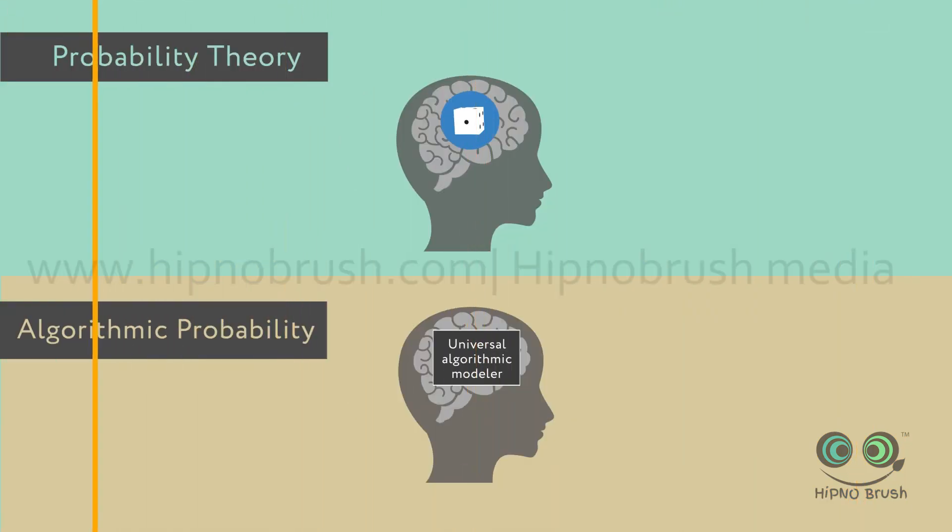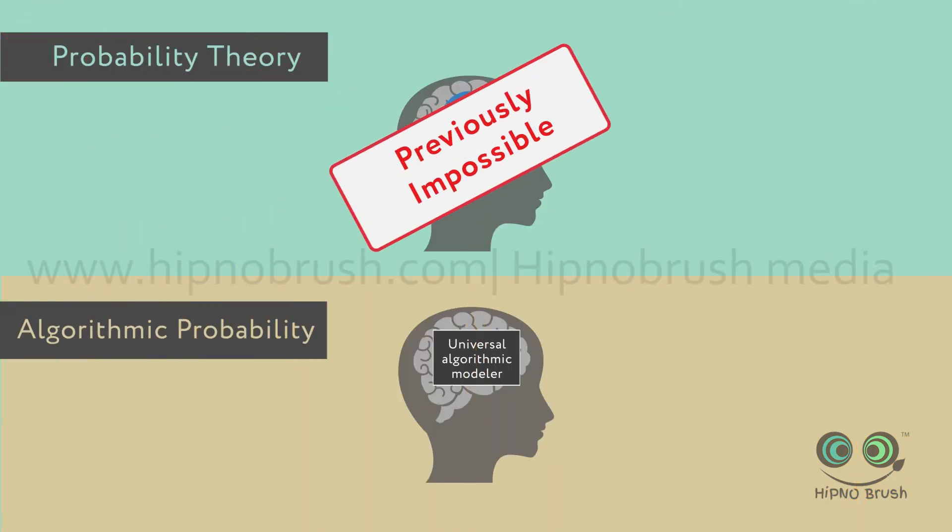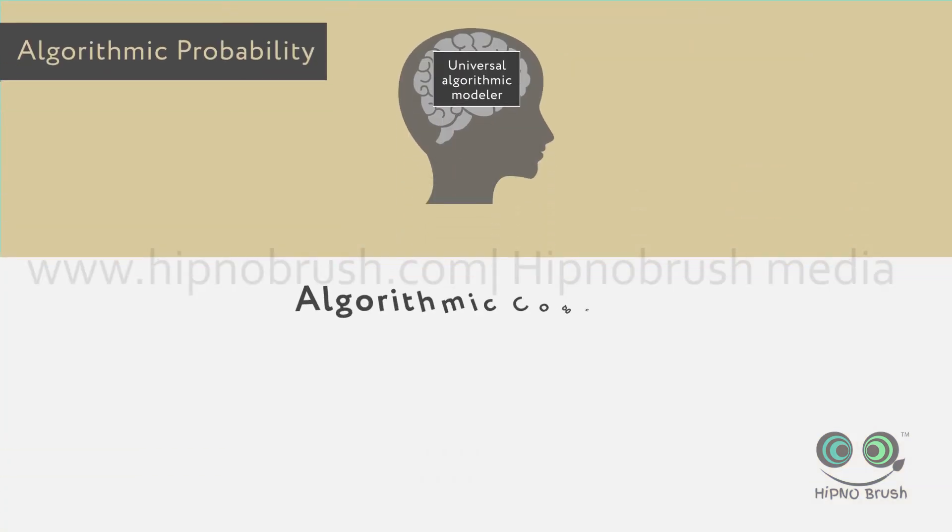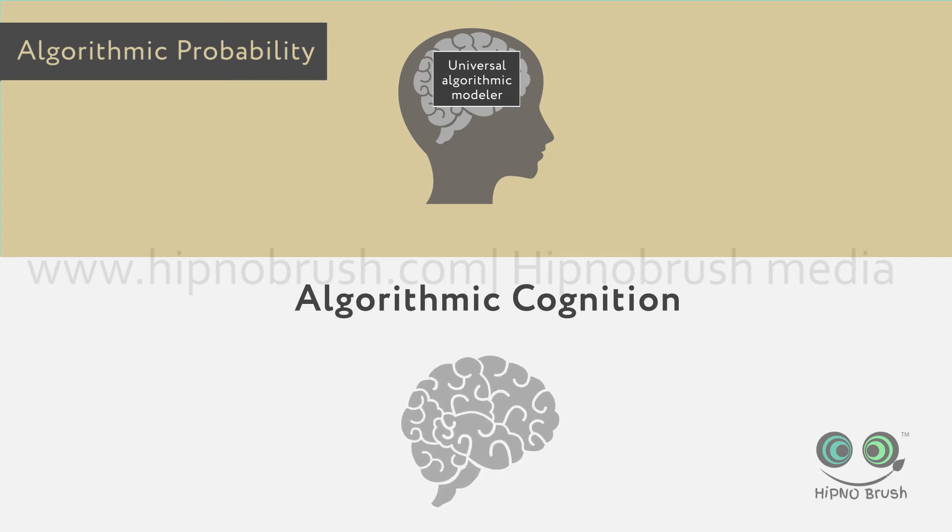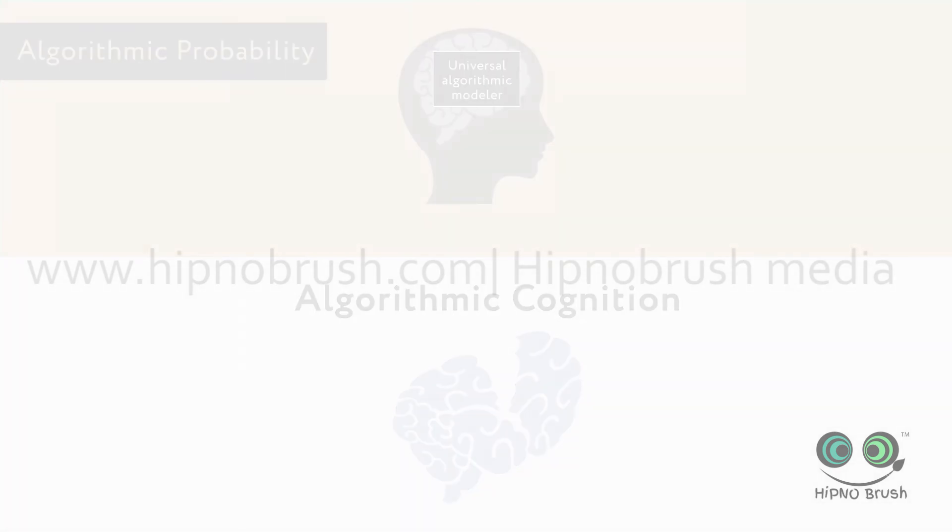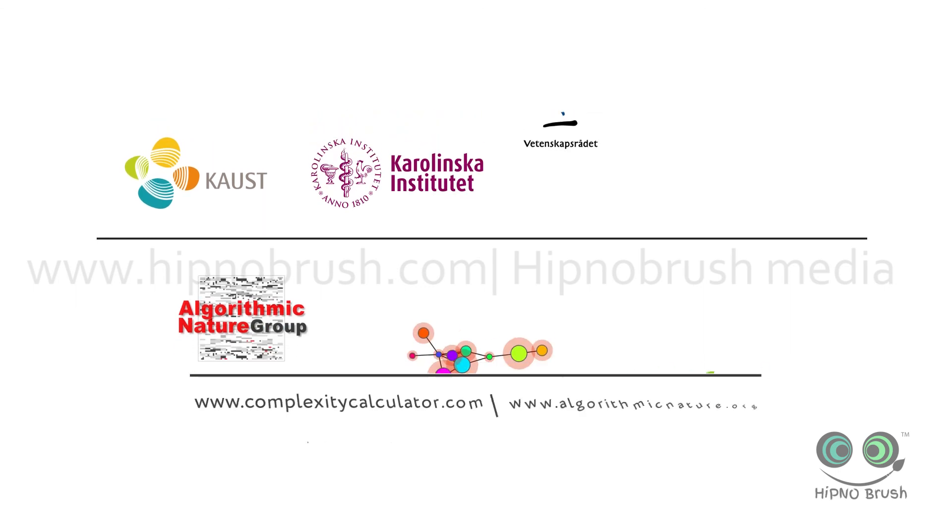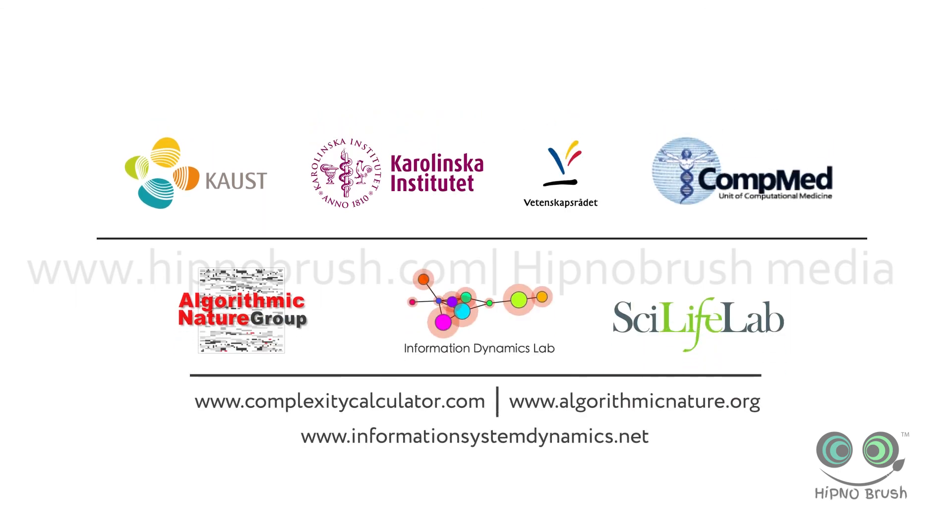These kinds of discoveries were, however, impossible to make before with traditional tools and classical measures. And they foreshadow algorithmic cognition as an exciting new field of research to tackle some of the top pressing issues related to mental disorders and neurodegenerative diseases.